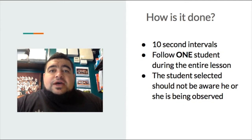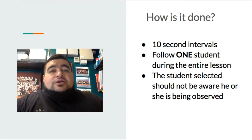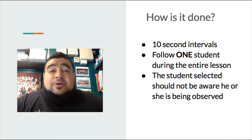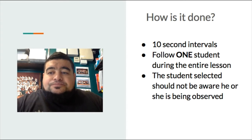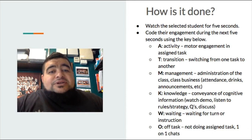So how is it done? We break the lesson down into 10-second intervals and follow one student during the entire lesson. That student is graded on what they're doing during those 10-second slots. The student shouldn't be aware they're being observed, because that would change their behaviour — something called the Hawthorne effect, where people change their behaviour when being observed. We watch a student for 5 seconds, then in the next 5 seconds we code their involvement or engagement using the key on the right.